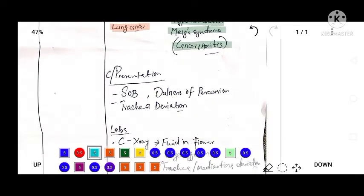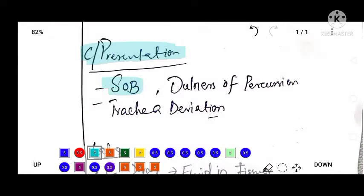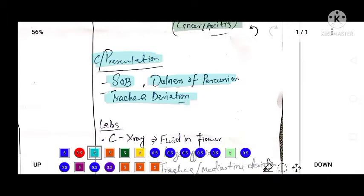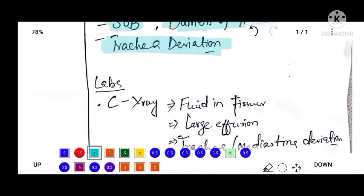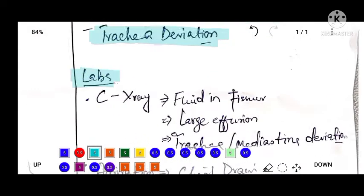Clinical features of pleural effusion are shortness of breath—the patient will complain of difficulty breathing. Dullness on percussion and the trachea will be deviated to the opposite side in pleural effusion.